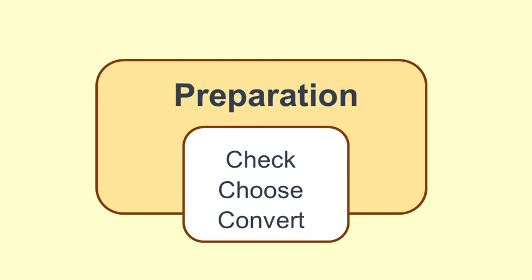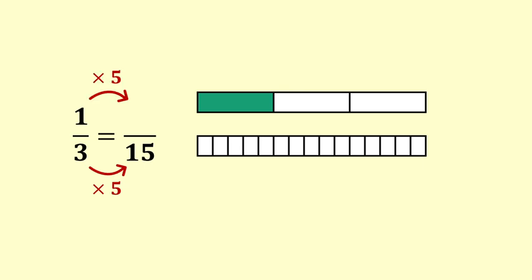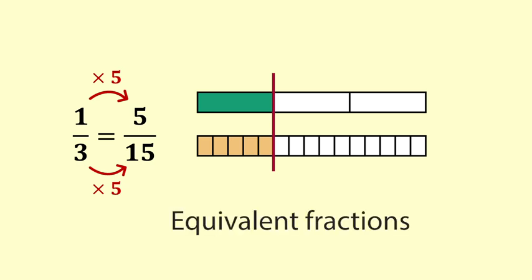We need to convert each of the two fractions to equivalent fractions using the common denominator. To convert thirds to fifteenths we ask: what do we need to multiply 3 by to get 15? The answer is 5. We have multiplied the bottom by 5, and to keep the amount the same we also multiply the top by 5. You can see in the bar diagram that 5 fifteenths is the same quantity as 1 third — they are equivalent fractions expressing the same quantity.